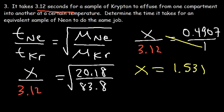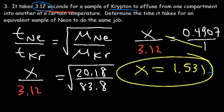So 1.531 seconds is the time it takes for neon to do the same job. This makes sense: krypton is the heavier atom and takes 3.12 seconds because it moves slower, whereas neon is lighter and moves faster, so it takes a shorter time of 1.531 seconds to effuse from one compartment to another.